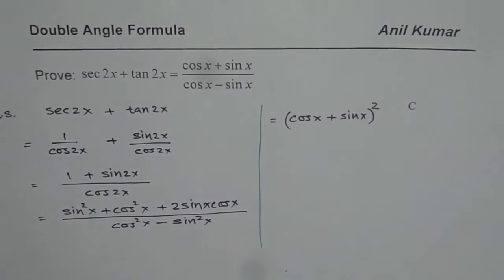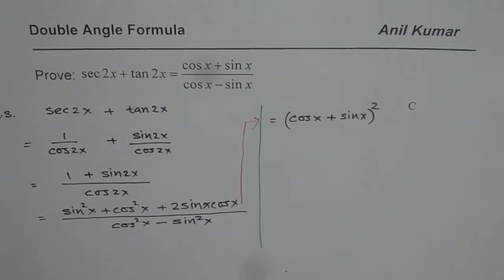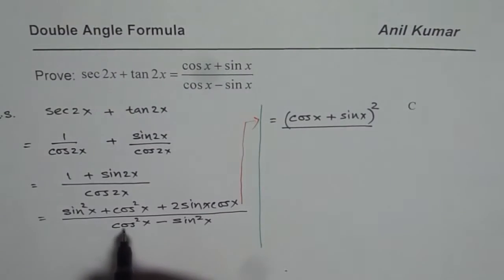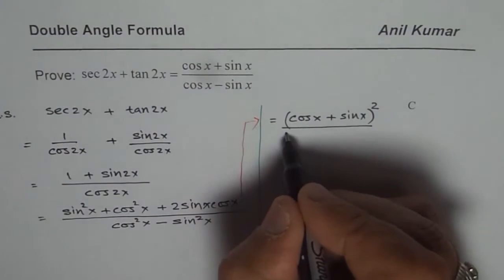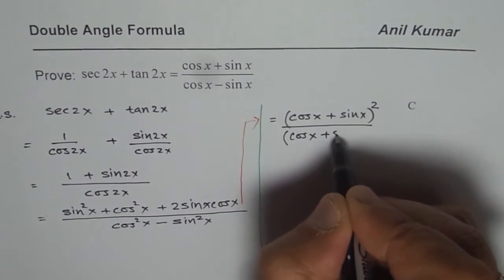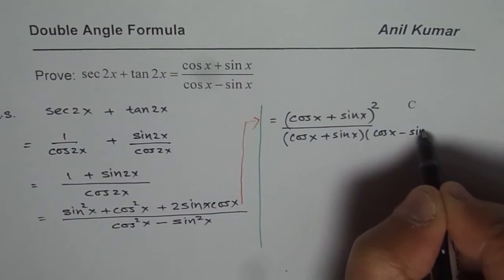We are working still with the left side. I am using this later half, right half of my paper, divided by cos square x minus sin square x. I can factor this and write this as cos x plus sin x times cos x minus sin x.